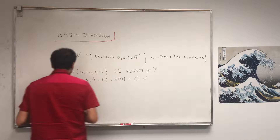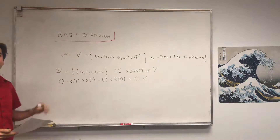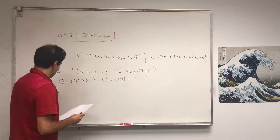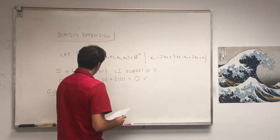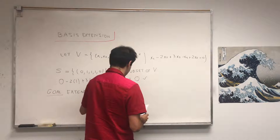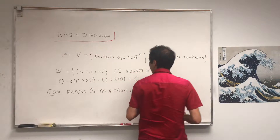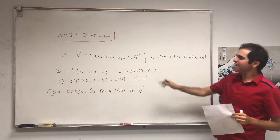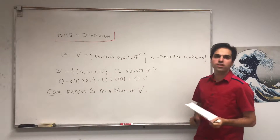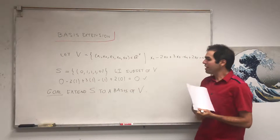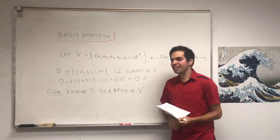The goal is to find a basis for V which contains S — in other words, extend S to a basis of V. We want a basis of V that starts with S, that is (0, 1, 1, 1, 0), and a bunch of other vectors. The fact that S has only one element doesn't matter; you can do it with any finite set.